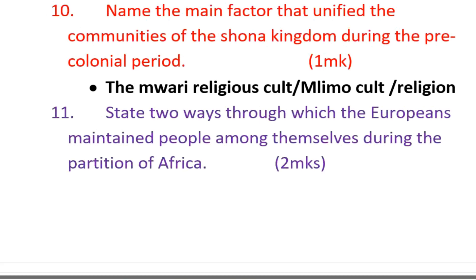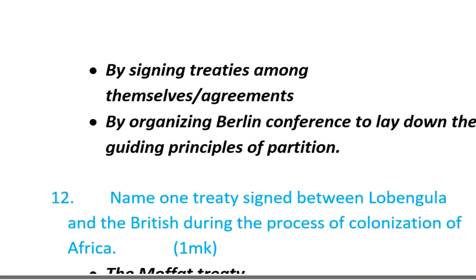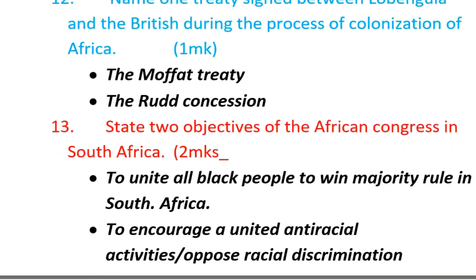Question ten: state two ways through which Europeans maintained peace among themselves during the partition of Africa. Number one, by signing treaties and agreements among themselves. Number two, by organizing the Berlin Conference to lay down the guiding principles of partition. Question twelve: name the treaties signed between Lobengula and the British during the colonization of Africa — the Moffat Treaty and the Rudd Concession. This question is very commonly repeated.